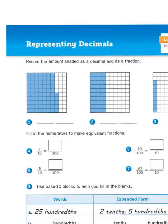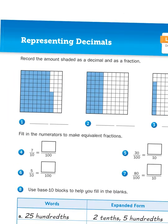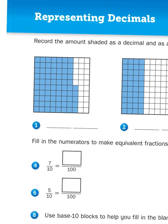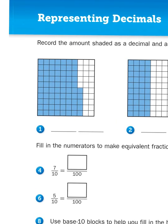The first row of problems says record the amount shaded as a decimal and as a fraction. So this box that has been divided into 100 smaller boxes represents hundredths. Every column completely filled in represents a tenth or ten hundredths, and every loose box after that represents hundredths.